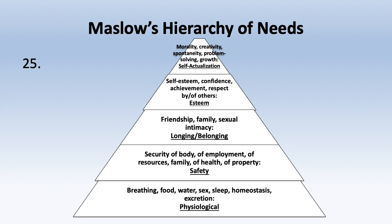Once physiological and safety needs are met, people are interested in belonging — friendship, family, and sexual intimacy. Even higher than that are esteem needs — self-esteem, confidence, achievement, and respect from others. We all want to feel good about ourselves. In the pyramid model, the needs at the bottom must be met before higher needs can motivate.